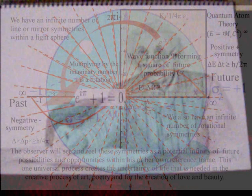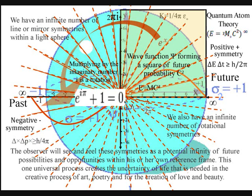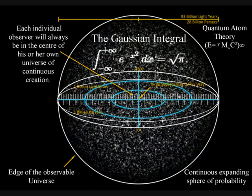An observer can never get to the edge of the universe, because he is creating his own space-time relative to its energy. It makes no difference what galaxy you observe from, because time and space are interlinked. The greater the time dilation, the greater the length contraction of space. In this way, an infinite universe fits within a finite sphere, as long as the sphere is expanding continuously in space and time, as an infinity of possibilities that can be represented mathematically as the square root of the continuous irrational number pi.